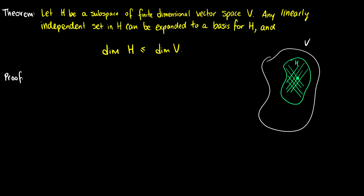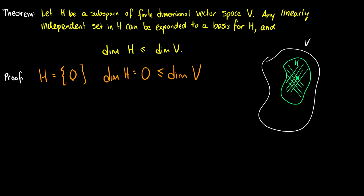Let's start with a very simple case. What if H is just equal to the zero space? Well the dimension of H is just going to be 0, and this is always going to be less than or equal to the dimension of V no matter what.